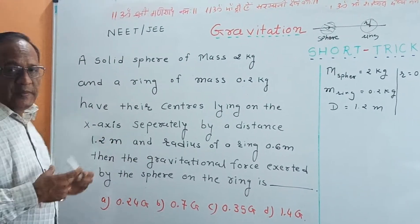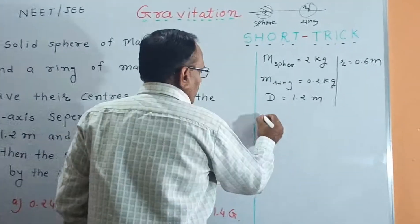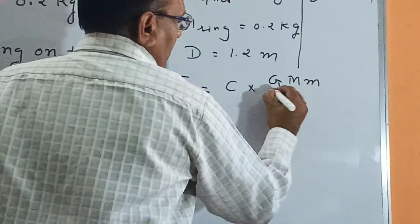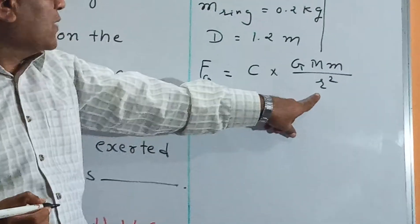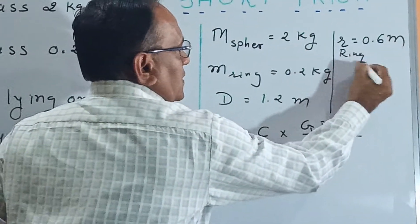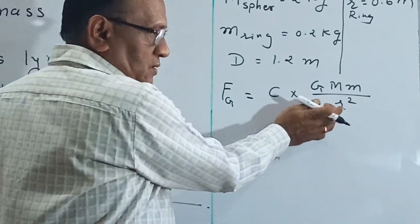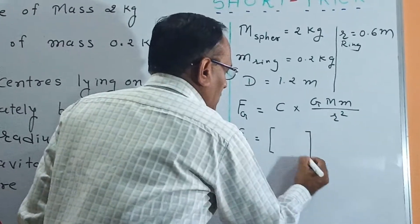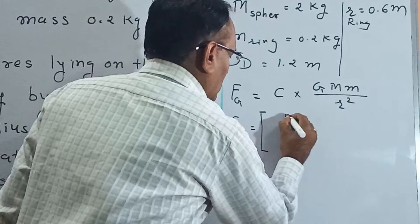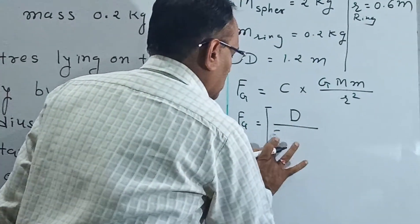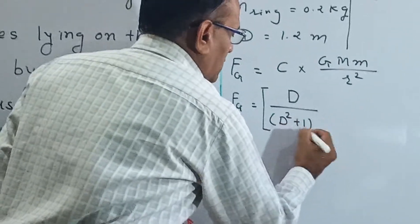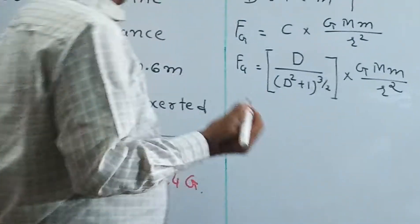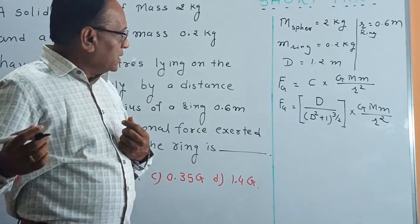It is difficult to solve directly, but I give the best short trick to solve it. The force of gravity equals G·M·m/R², but with a correction constant C. Here R is the radius of the ring. Remember that C equals D divided by (D² + R²) raised to the power 3/2. This is the formula for solving the gravitational force between a sphere and a ring.